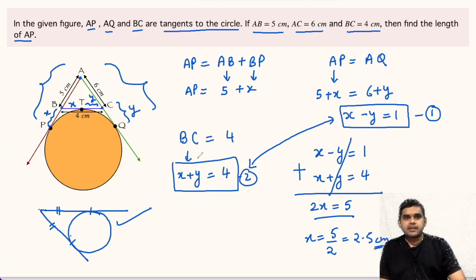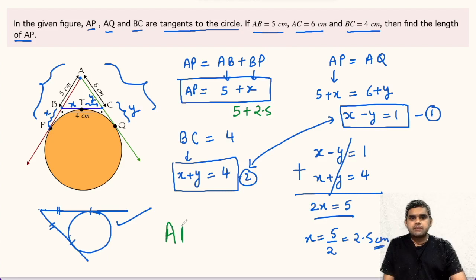Now we were asked to find the value of AP. AP was equal to 5 plus X, so we can write 5 plus 2.5. AP will be equal to 7.5 centimeter. This will be the answer.